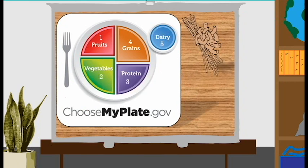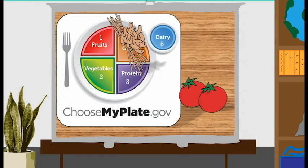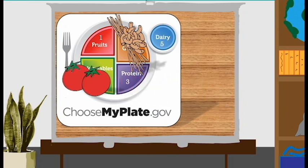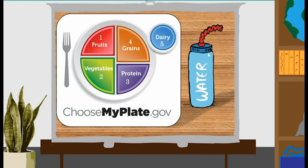Now we've got some whole grain pasta and some tomatoes. Which section do they go to? The pasta goes to grains. And the tomatoes go to the vegetable section.